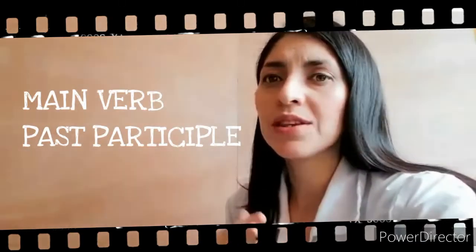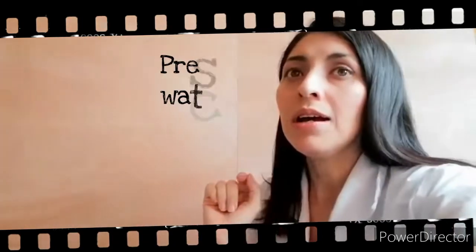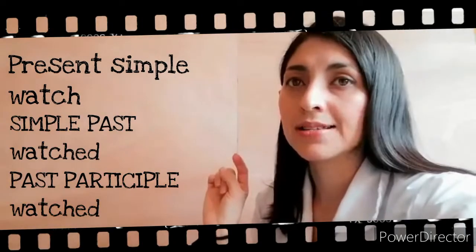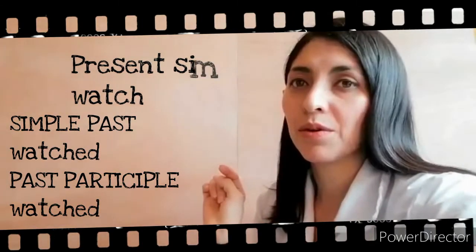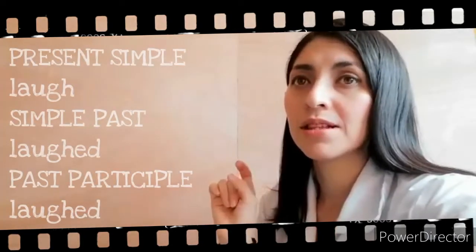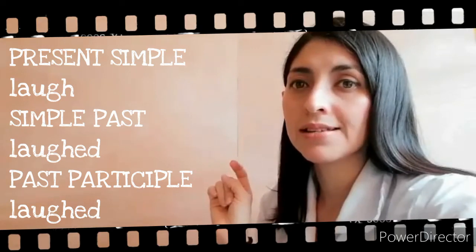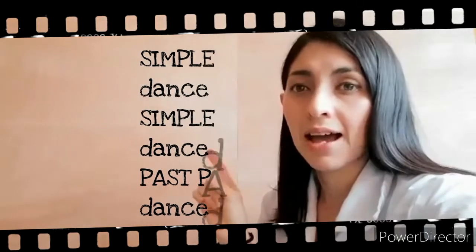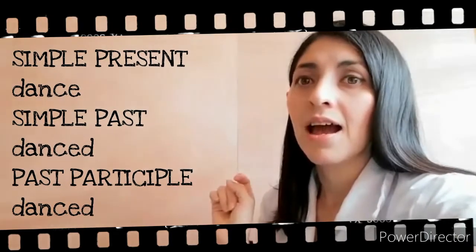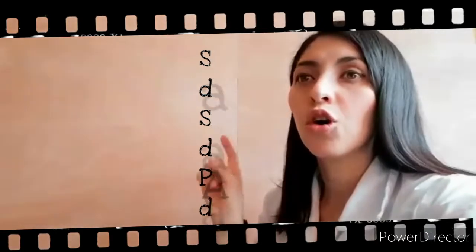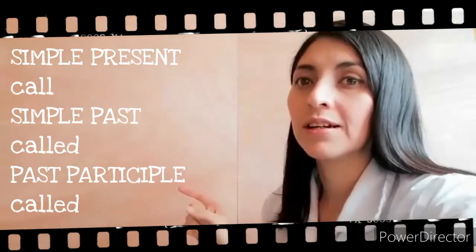Moving on to the next part of the form: the main verb in past participle. With this, there's no problem with regular verbs because it's the same as simple past — you just need to add -ed. For example, 'watch' becomes 'watched' in simple past, and 'watched' in past participle. 'Love' becomes 'loved,' 'dance' becomes 'danced,' and 'call' becomes 'called' — same in both.